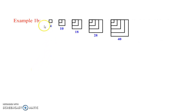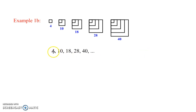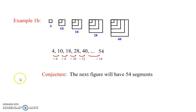Here's another example. If you look at these shapes, we have the numbers 4, 10, 18, 28, 40. What would be the next number in this sequence? The differences are: plus 6, plus 8, plus 10, plus 12. The next number in this sequence should be plus 14, so the next number would be 54. The conjecture here is the next figure will have 54 segments.